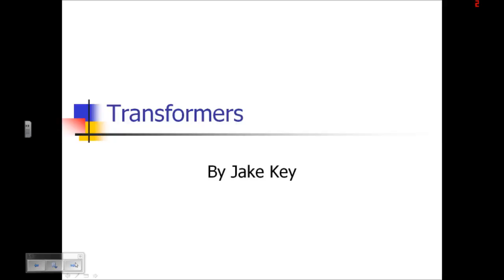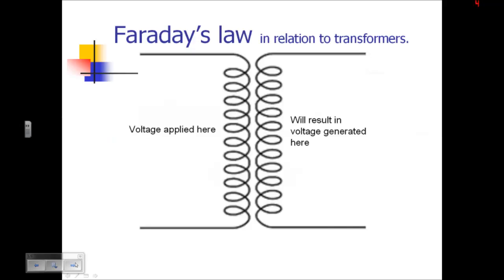This presentation will be about the basics of transformers. Faraday's law basically states that a changing magnetic field will generate a voltage. So let's say you have two coils of wire and you apply alternating current to one of them.